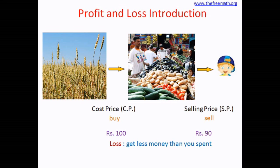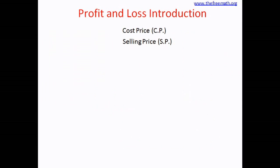Loss is when you get less money than you spent. This is true for any business — not just a vegetable seller, but any shop owner or business. If you get less money than you spend, you incur a loss. If you get more money than you spend, you get a profit. The key terms are cost price (CP) and selling price (SP).